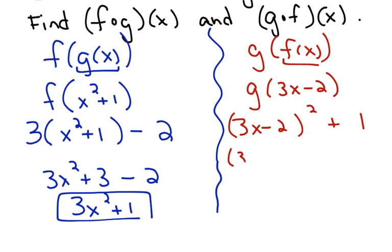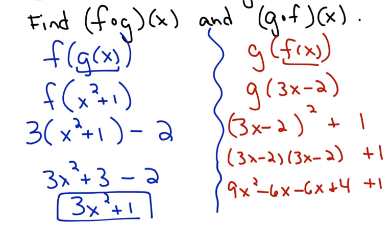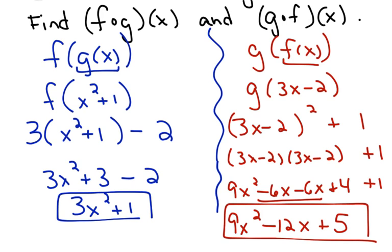All right, don't forget, every time you see an expression squared, you're going to do this. And then you're going to FOIL, so you get 9x squared minus 6x minus 6x plus 4. And don't forget about your plus 1 that's outside. These do not cancel. They're not opposites. 9x squared minus 12x plus 5 is the final answer. So notice that when I change the direction in which I did my composition, I did not get the same answer.